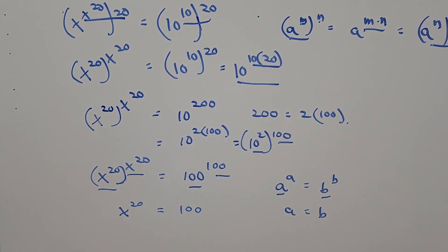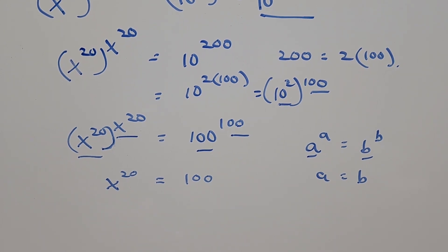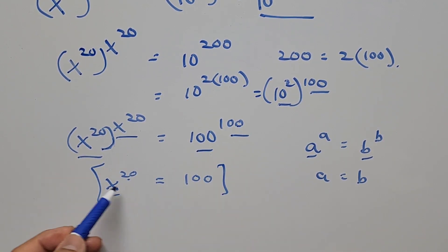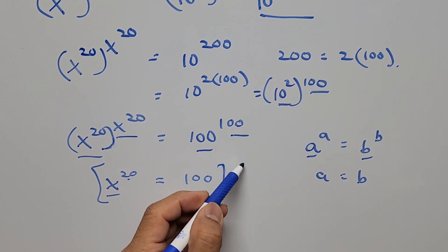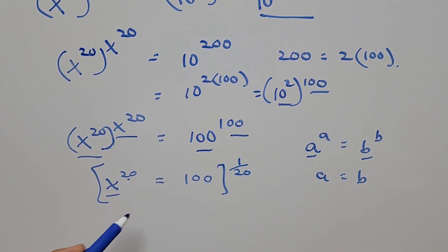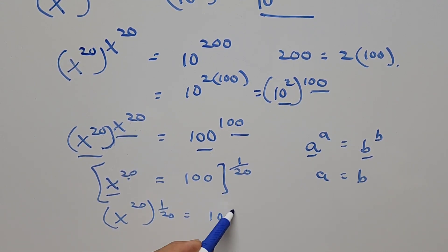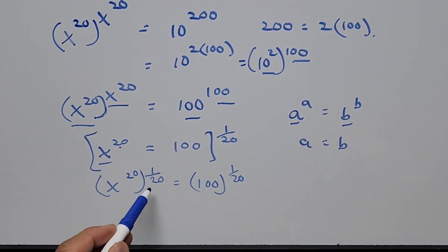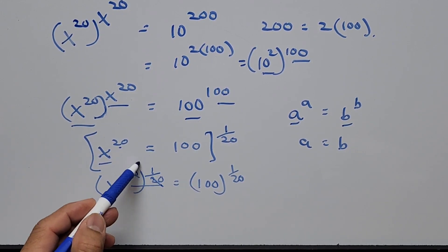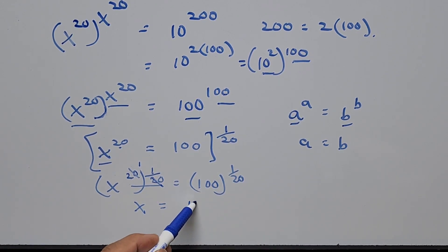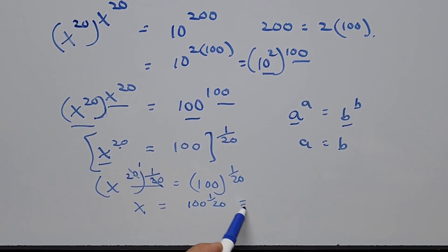The equation now becomes: x to the power of 20 equals 100. To get the value of x, we raise both sides to the reciprocal of the exponent — that is, 1 over 20 — to get rid of that exponent of 20. So we have x to the power of 20 raised to the power of 1 over 20, equals 100 raised to the power of 1 over 20. The left-hand side simplifies since 20 divided by 20 is 1, leaving just x.